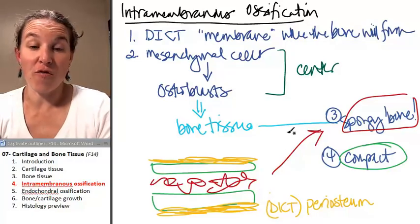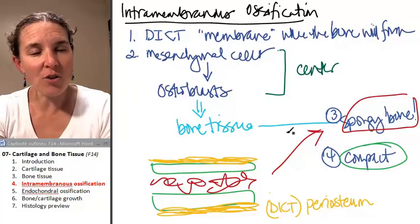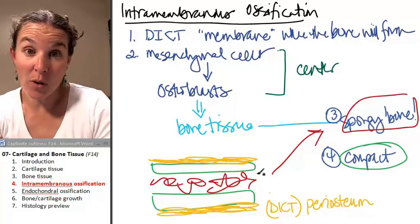Let's talk about the other form of ossification, which is endochondral ossification, and that's how we end up with our long bones.